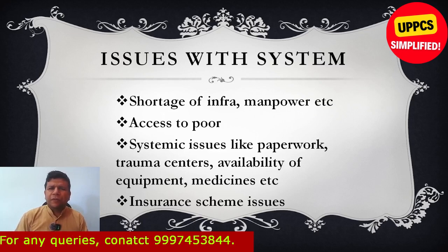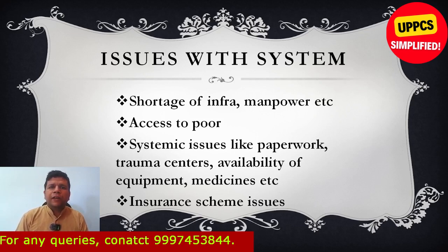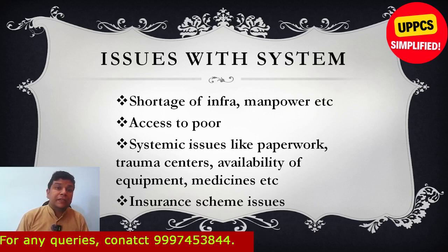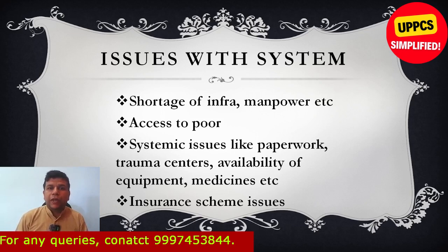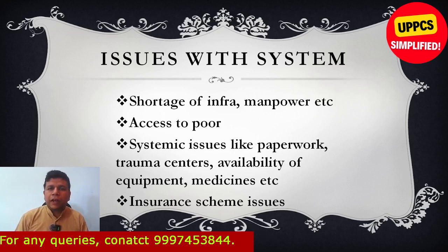Then, issues with the system. Issues can be of multiple types — shortage of infrastructure, shortage of manpower, less access for the poor because of affordability concerns. Then there are systemic issues like a lot of paperwork, not enough trauma centres, unavailability of equipment, medicines not available even in government hospital stores. And when insurance is discussed as a solution, insurance itself may have issues — for example, not everything is covered, and insurance might be a bit expensive.